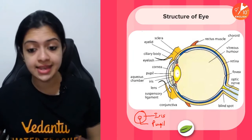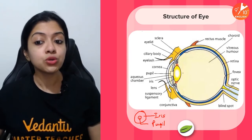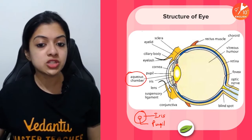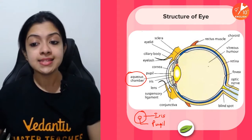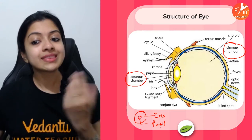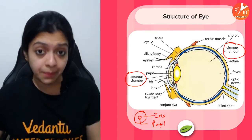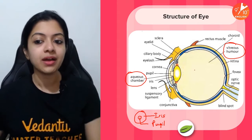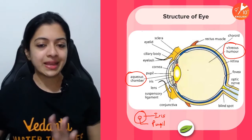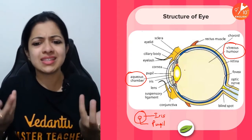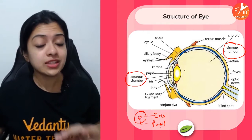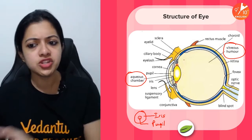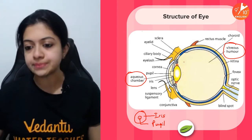There is also the biconvex lens in the eye. Apart from this, we can divide the eye into two chambers: the aqueous chamber, which is filled with aqueous humor, and the vitreous chamber, which is filled with a thicker substance called vitreous humor. The aqueous humor is more fluid in consistency, while the vitreous humor is more jelly-like and thicker.